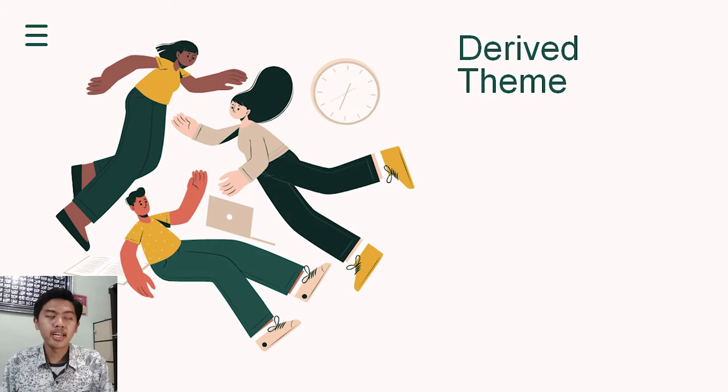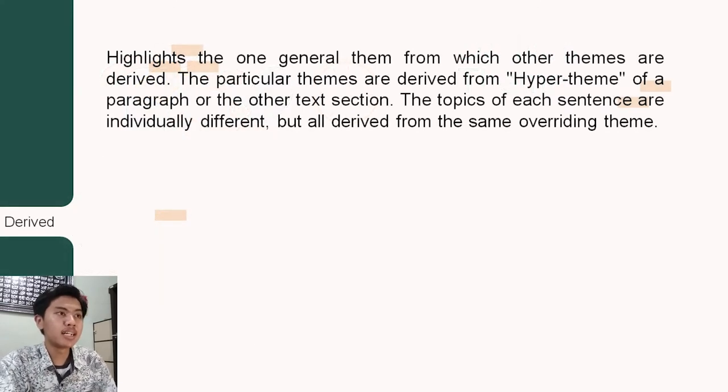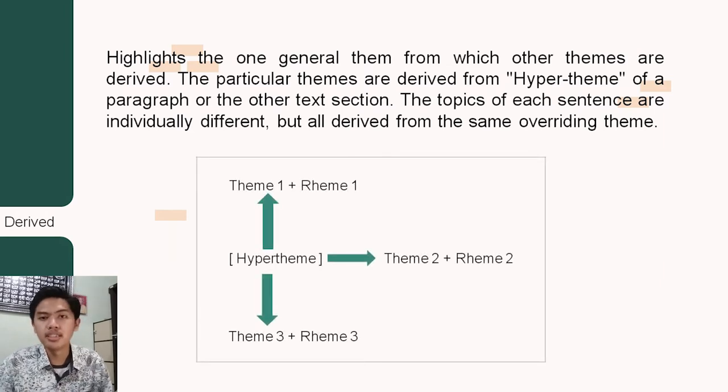Hello, my name is Muhammad Aditya Widjaya and I will continue our presentation. In this opportunity, I want to tell to you about the Rheme theme. The Rheme theme highlights the one general theme from which other themes are derived. The particular themes are derived from the hyper-theme of a paragraph or the other text section. The topic of each sentence are individually different, but all derived from the same overarching theme. Okay, this is the structure of how we can know about the Rheme theme. Theme one, theme one, rheme one. Until the next theme ten and rheme ten, it must be hyper-theme. What is hyper-theme? Hyper-theme is each sentence must be related.